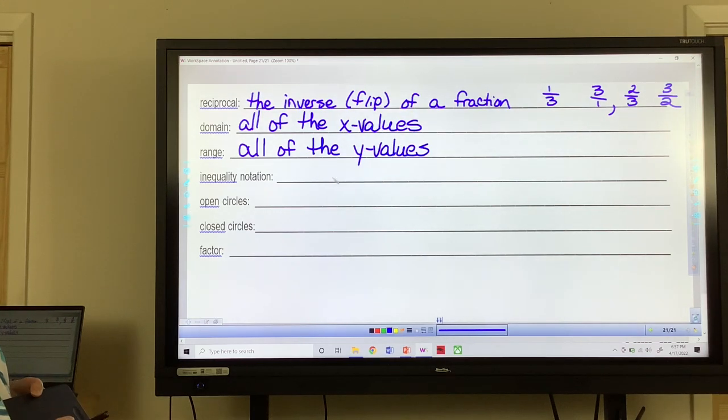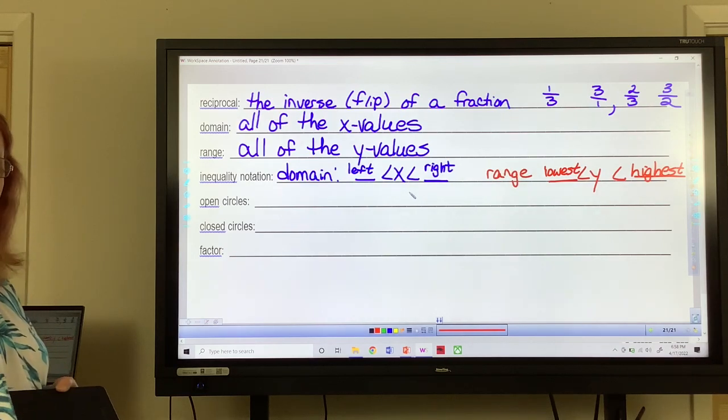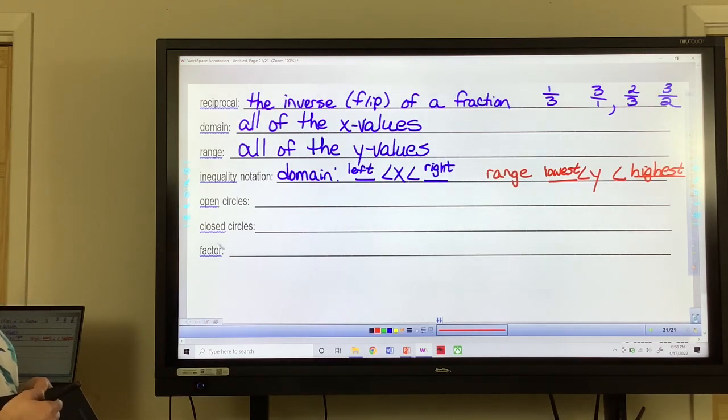In equality notation for domain, it would be your x's and that's going to be the left value and the right value. For your range, it'll be the y and it'll be the lowest value or the highest. And then your inequality notation will change based on open circles or closed circles.